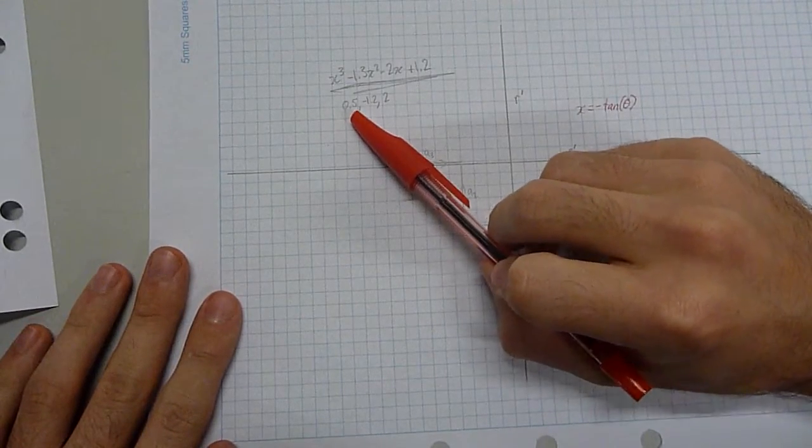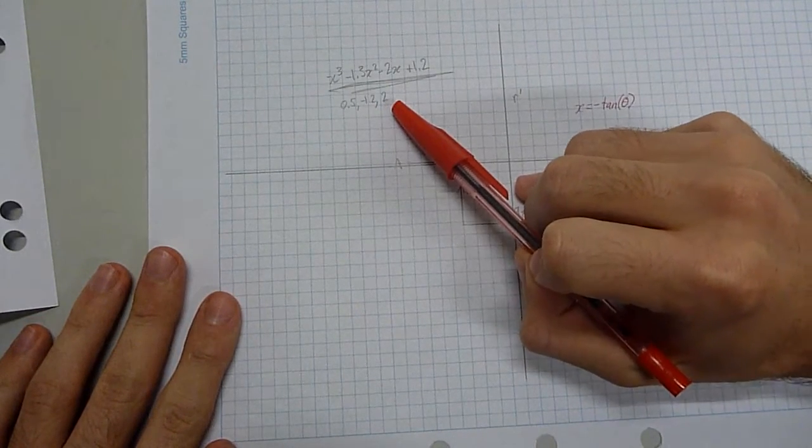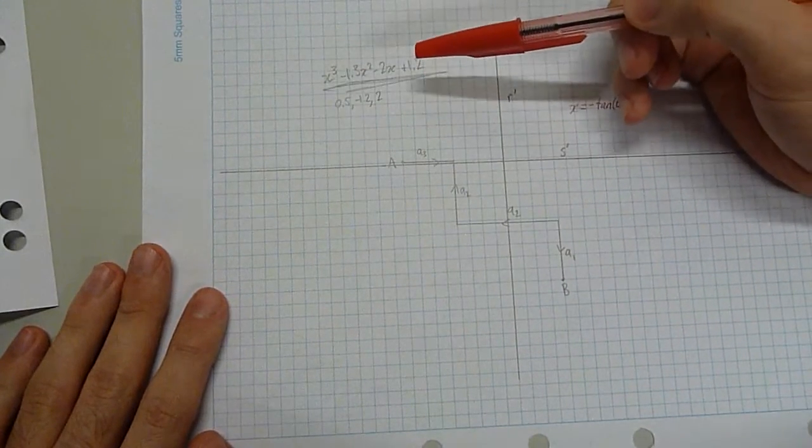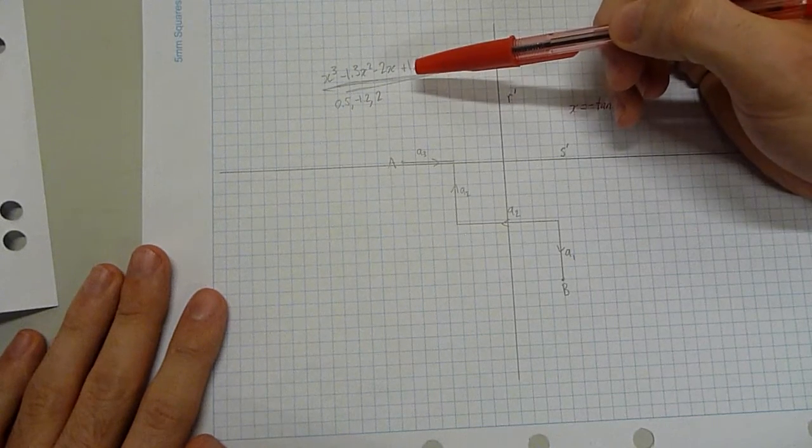They're all real, and so we've got 0.5, negative 1.2, and 2. And the cool thing about the whole method that we're doing is that if we've got all real coefficients of a cubic, we're guaranteed at least one real solution.